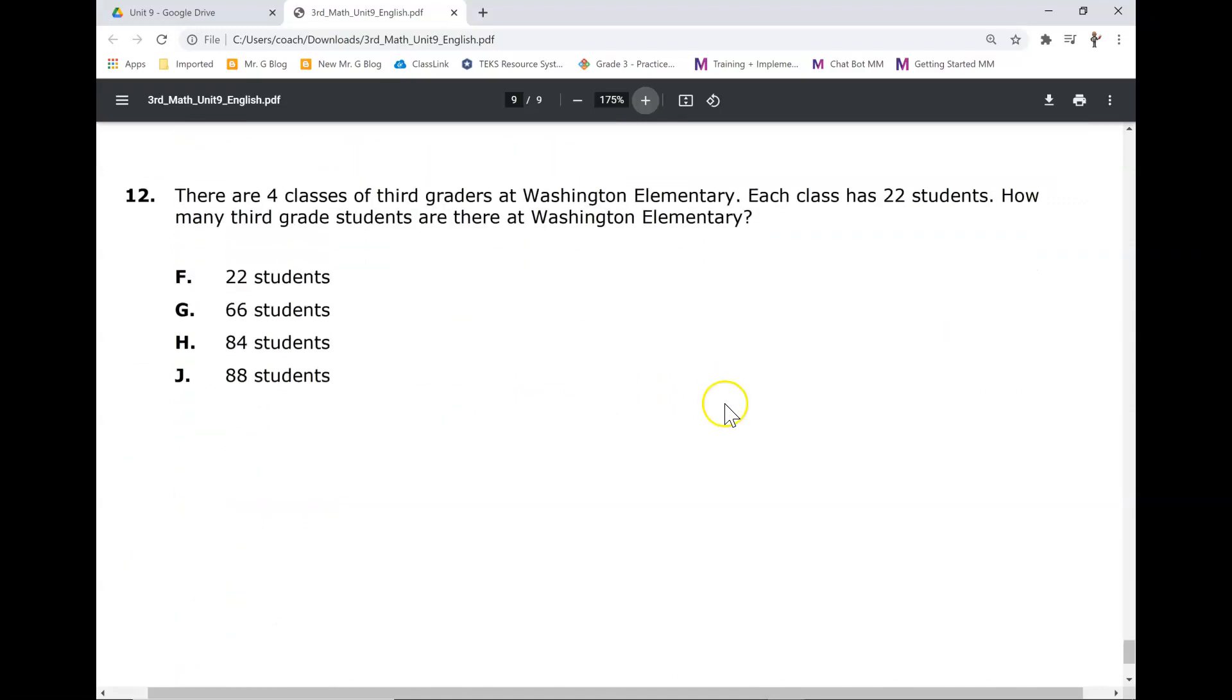Number 12. There are four classes of third graders at Washington Elementary. Each class has 22 students. How many third grade students are there at Washington Elementary?